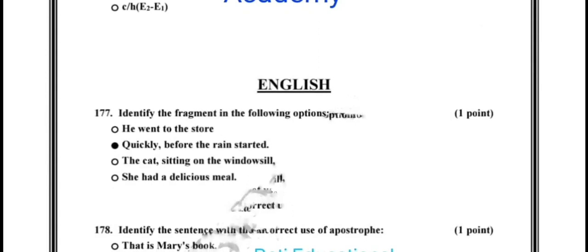Question number 177. Identify the fragment in the following options. And the correct option is quickly before the rain started.